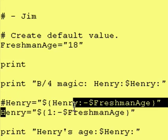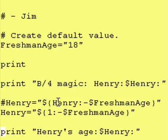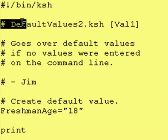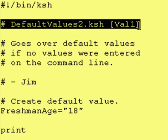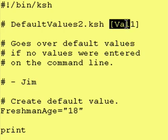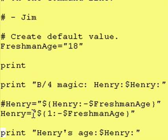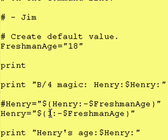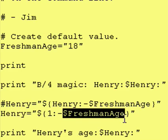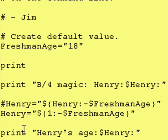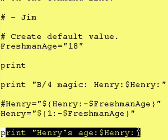In our current example, we replace Henry with the number 1 — in other words, this is $1, which would be the first parameter you would enter. Going back up to the top, the $1 is this optional value you can enter. So if a person enters a value, then that gets assigned to Henry. If the person doesn't enter a value, then freshman age gets assigned to Henry. And we just print the value of the variable Henry afterwards.